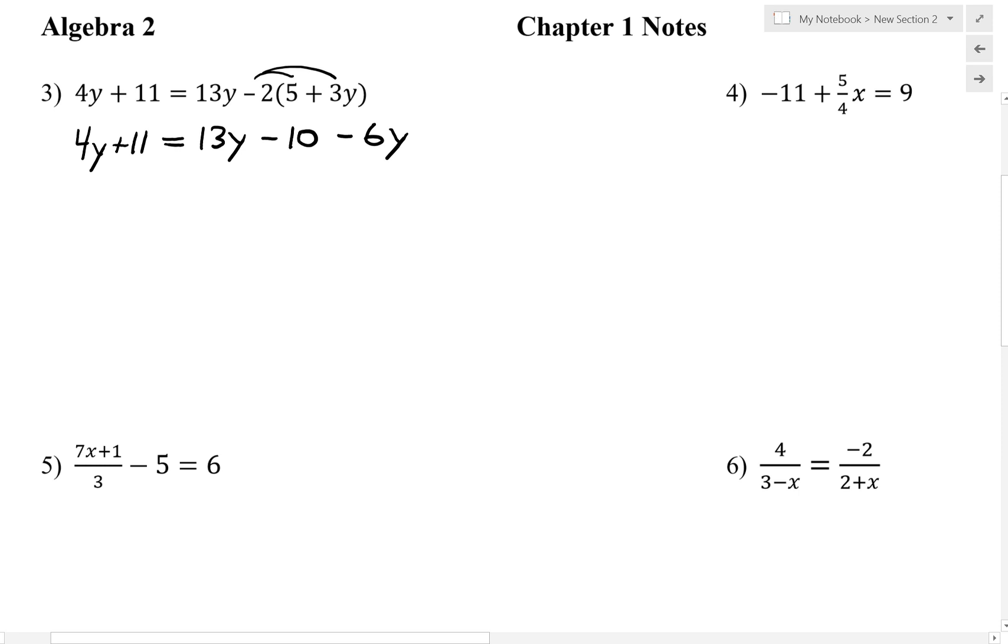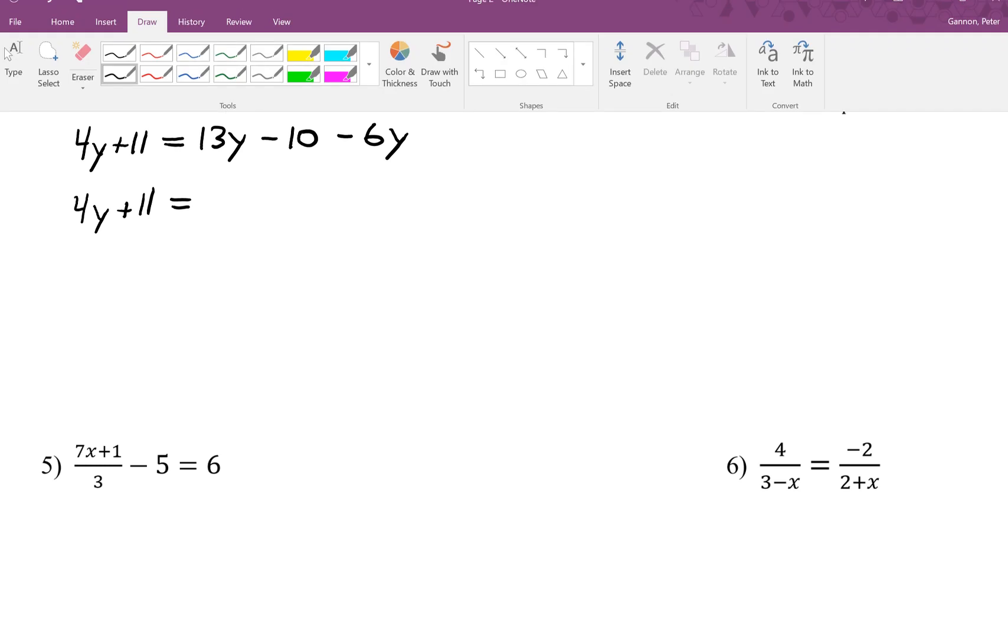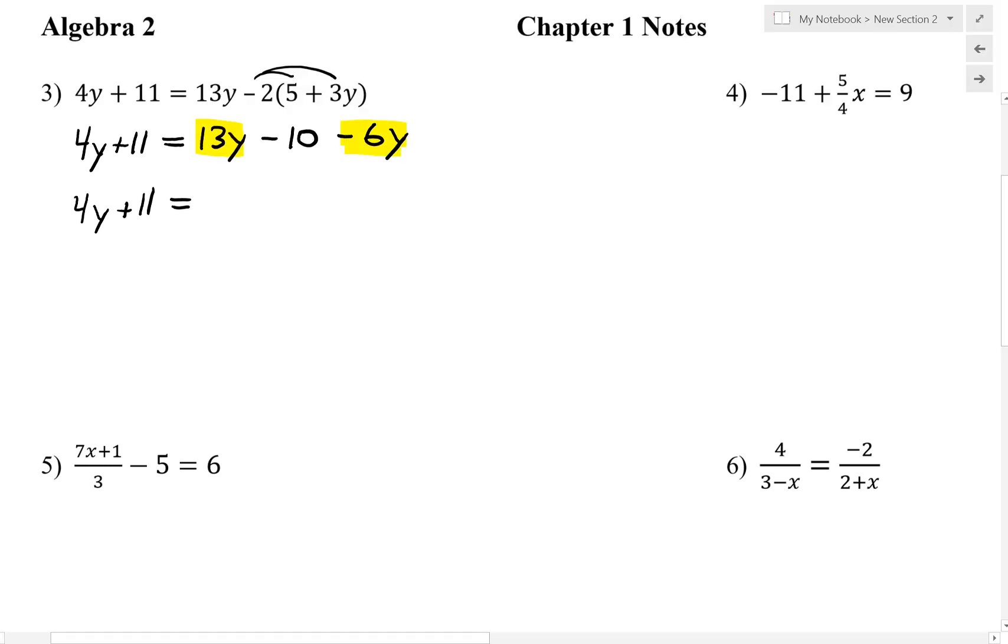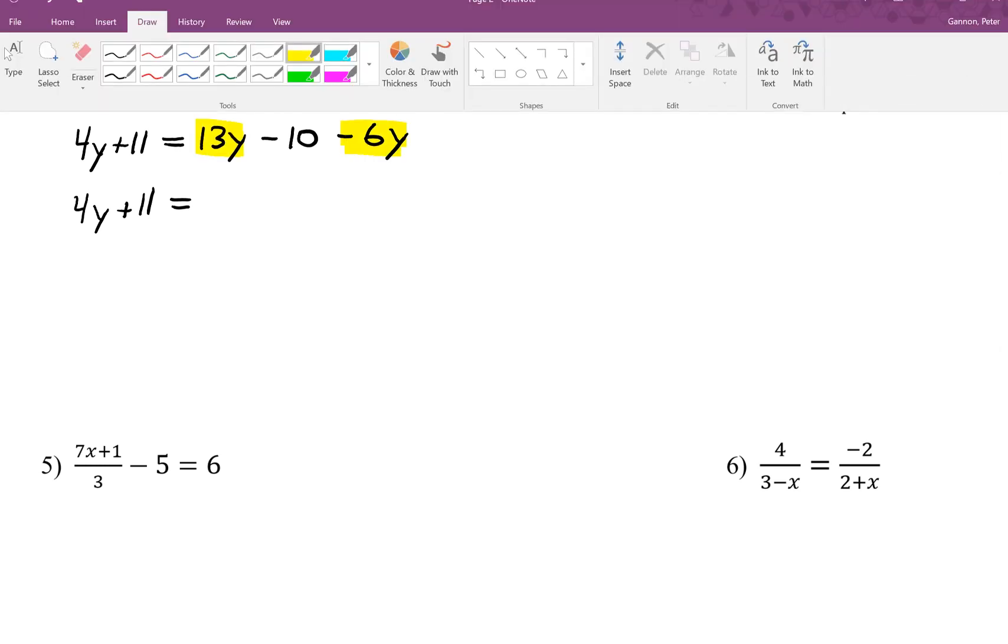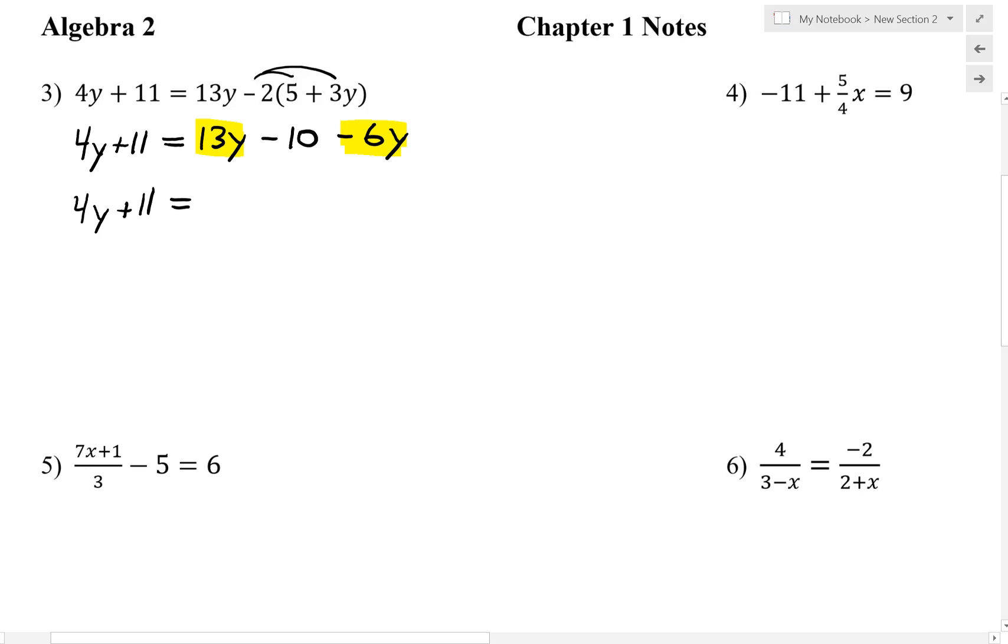We need to make sure both sides are simplified. We're not quite done with the right-hand side. So I'm going to bring down and rewrite the 4y plus 11, bring down the equal sign. And then we're going to combine our 13y and our negative 6y. So 13y minus 6y is going to give us 7y minus 10.